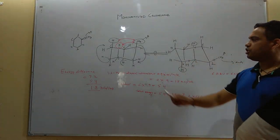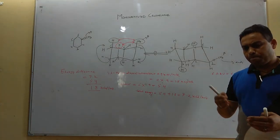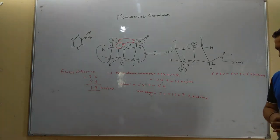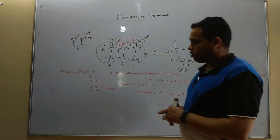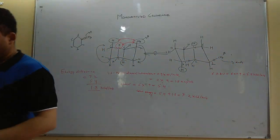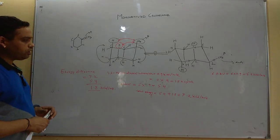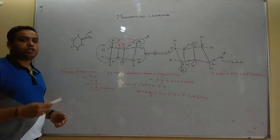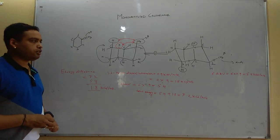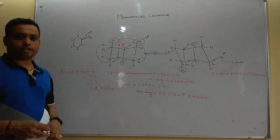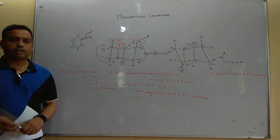This is how we can draw methylcyclohexane — mono-substituted methylcyclohexane. If you like the explanation and are new to the channel, please subscribe to Tetrahedron Chemistry Classes and don't forget to press the bell icon for the latest notifications. Thank you.